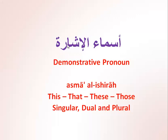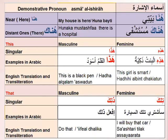Today we will cover the demonstrative pronouns. In my last video I covered 'this' and 'that' only for singular, so today we will revise that and also cover dual and plural — this, that, these, and those. Something placed nearby we say 'hona' and something placed far away we say 'honaka'.